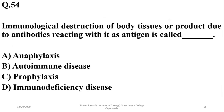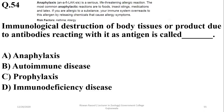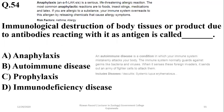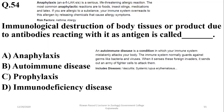Question 54: Immunological destruction of body tissues due to antibodies reacting with its own antigens is called autoimmune disease. Anaphylaxis refers to an overreaction of the immune system to an allergic substance. Prophylaxis means preventive measures. Autoimmune disease is the condition in which your immune system mistakenly attacks your own cells, so B is the right option.